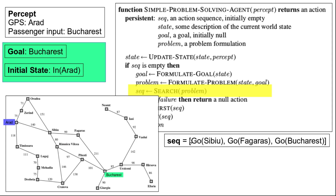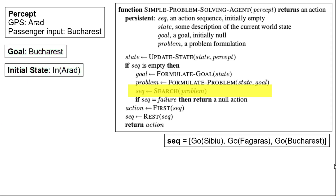The search algorithm returns a solution — a sequence of actions. One possible solution is: go to Sibiu, then go to Pitesti, and finally go to Bucharest. Of course there are other paths from Arad to Bucharest, but let's say the search algorithm provides this sequence of actions as the solution. Now we need to execute those actions in the execute phase.